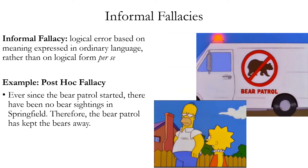Informal fallacies are ones that have a logical error that's defined, at least in part, based on the meaning that's expressed in the propositions or statements of the argument. So informal fallacies are not defined purely in terms of their logical form. An example is the post-hoc fallacy.